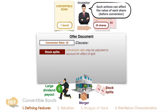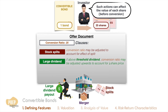For example, if there was a two-for-one split, the conversion ratio should be doubled. Likewise, for unusually large dividends that are above a specified threshold dividend, the conversion ratio may be adjusted upwards to account for the fall in stock price after the dividend payout.